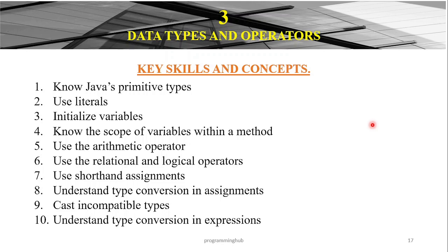In this Part 3 series, our main objectives shall be: we shall be looking at what primitive data types are, and what data types are generally in a programming language. After explaining what data types are, we are going to look at what operations we can perform on these particular data types, and how we can form complex data types using what we call the primitive data types. We shall also look at the possible operations that you can perform on the various data types.